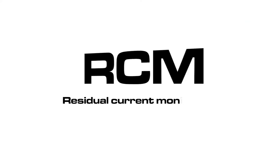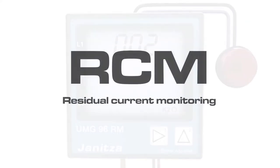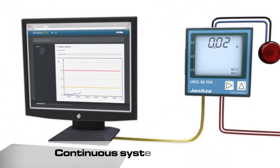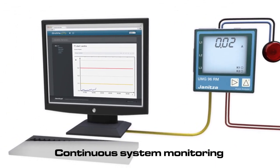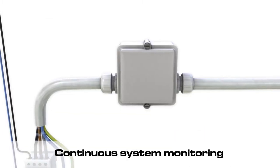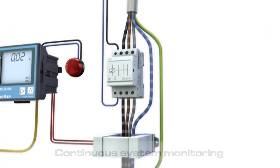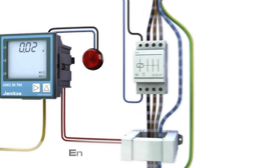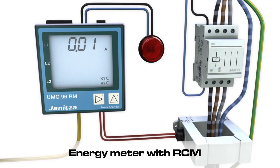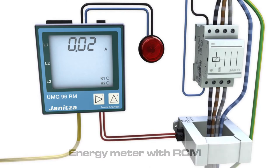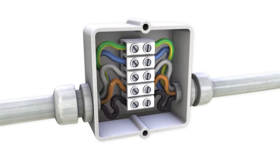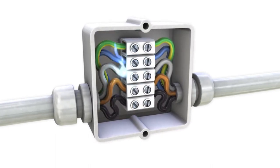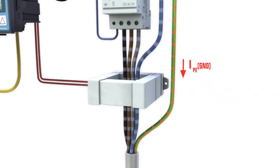An effective RCM residual current monitoring will detect fault currents before disruptions or plant shutdowns occur. In the measurement device UMG 96RME, that feature is already integrated. Utilize existing infrastructure and extend your system with residual current monitoring — this is how you will reliably identify beginning insulation faults long before they are noticed as disruptions.